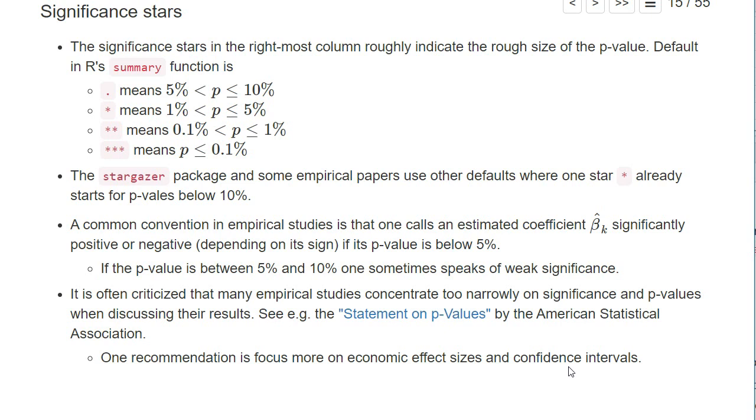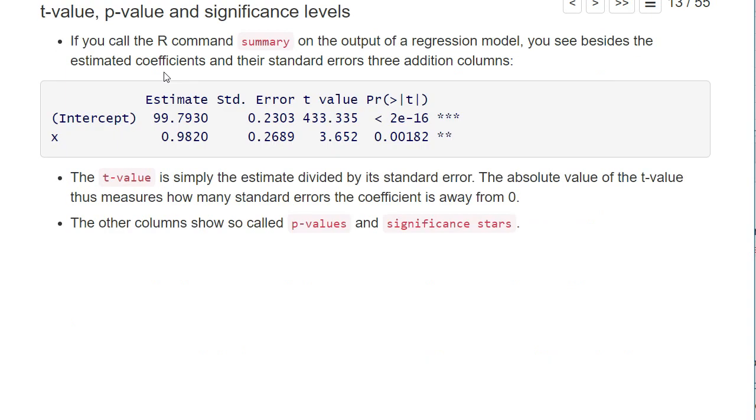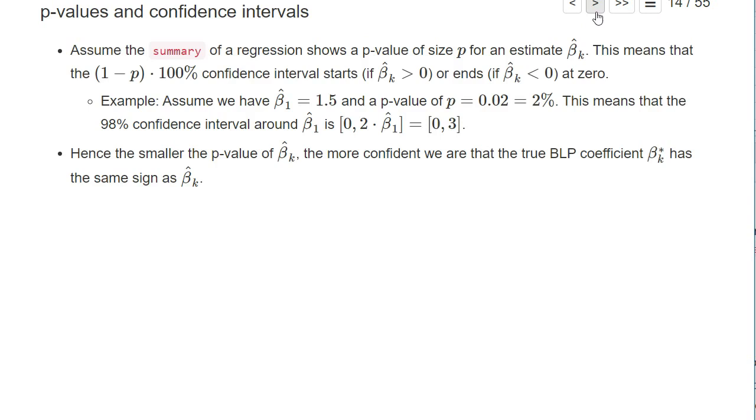I share this notion. If today's summary function of R would have been newly implemented, one probably would have shown the confidence intervals instead of the p-values and stars. But given backwards compatibility, we still unfortunately see p-values and stars as standard output instead of confidence intervals. However, there are also simple R functions that directly show you the confidence intervals instead of p-values and significant stars.